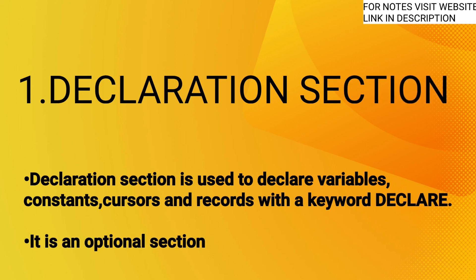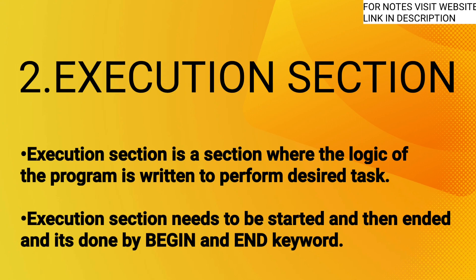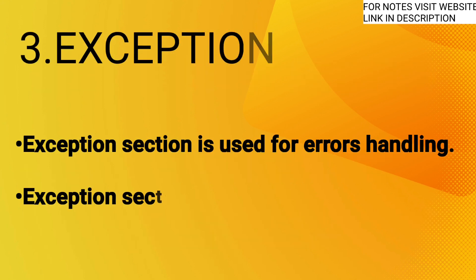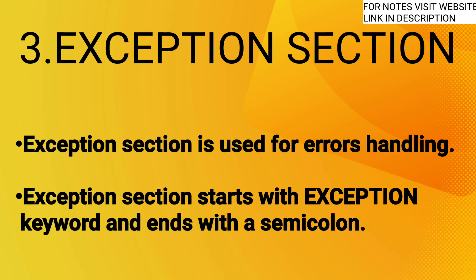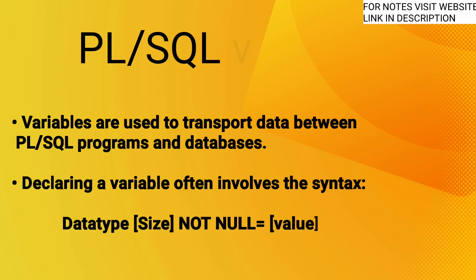There are three sections of a PL/SQL block: one, declaration section; two, execution section; three, exception handling section. The declaration section is used to declare variables, constants, cursors, and records with the keyword DECLARE — it is an optional section. The execution section is where the logic of the program is written to perform the desired task, started and ended with BEGIN and END keywords.